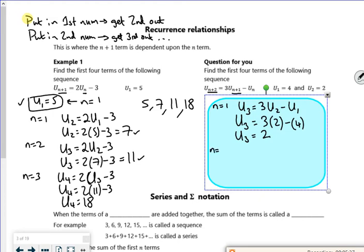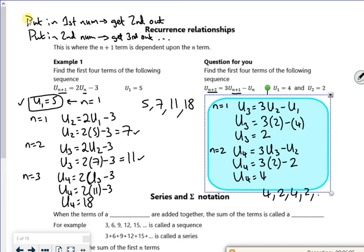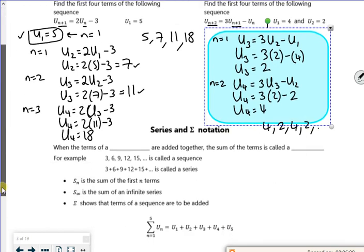And then if n is two, it will work out what u4 is. So u4 is three lots of u3 minus u2, which is two, that's going to be four. But if you look, the sequence here is going four, two, four, two. So I suspect that'll just keep on going four, two, four, two, four, two.